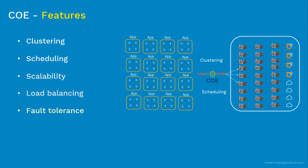The last feature is deployment. Container orchestration engine offers different ways to deploy apps. Imagine you have version 1 of an application already deployed and running in production with many users. When you need to upgrade to version 2, you need to choose a deployment method. One option is recreate — completely remove V1 and deploy V2, but there will be downtime. If you don't want downtime, you can choose a rolling update or canary method, where you slowly replace V1 with V2. The container orchestration engine gives you that flexibility.